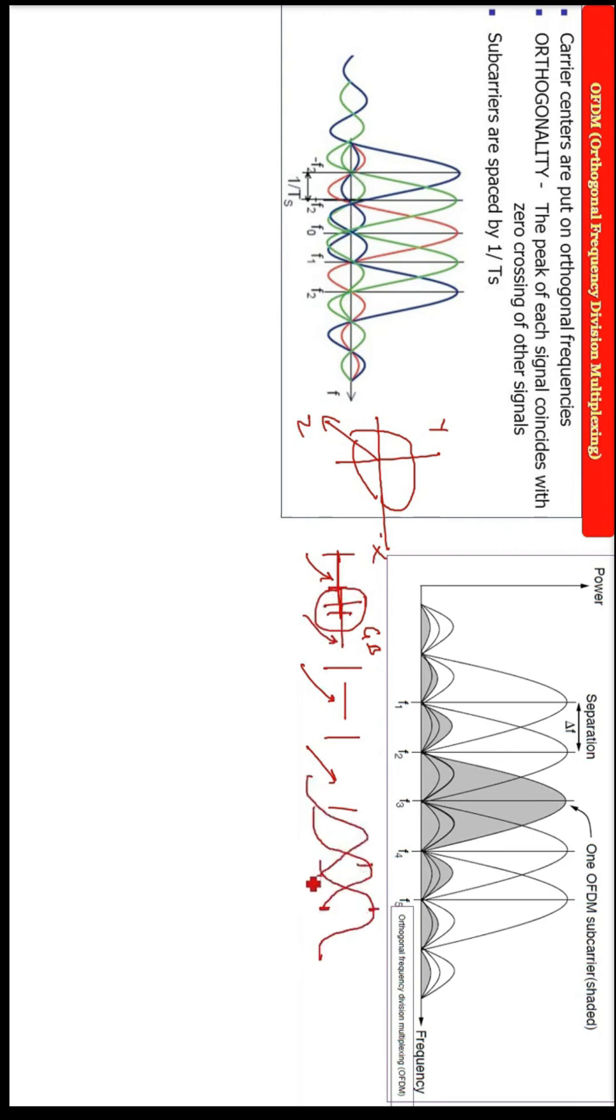So the peak of the first, wherever there is a peak of the first, there will be zero for others. The peak of the second, there will be zero for others. That is, the other frequencies will not be interfering with the frequencies in question.